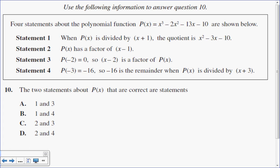We need to find the two that are correct. So let's start with statement number one. It says when p of x is divided by x plus 1, the quotient, that's the answer, is x squared minus 3x minus 10. So let's check that by doing long division.